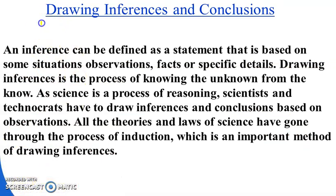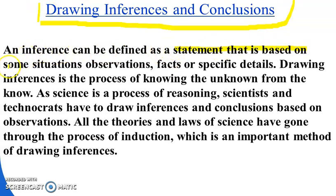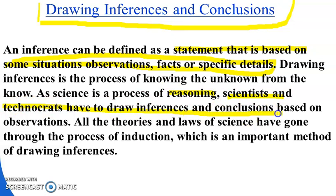The next process is drawing inference and conclusion. An inference can be defined as a statement that is based on some situations, observations, facts, or specific details. Drawing inference is the process of knowing the unknown from the known. As science is a process of reasoning, scientists and technocrats have to draw inferences and conclusions based on observations. All the theories and laws of science have gone through the process of induction, which is an important method of drawing inferences.